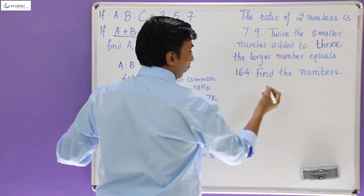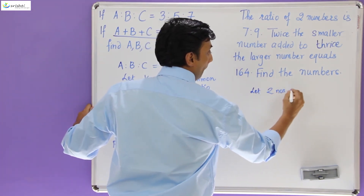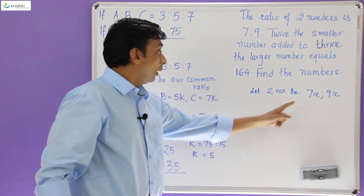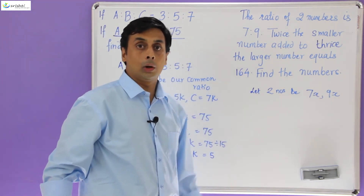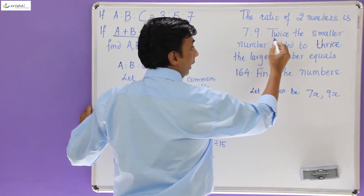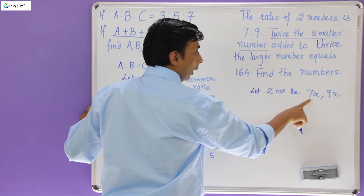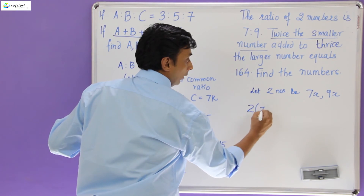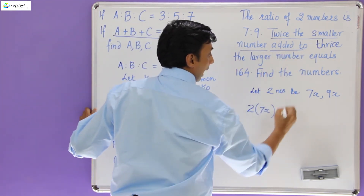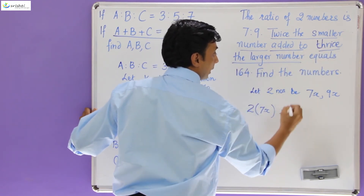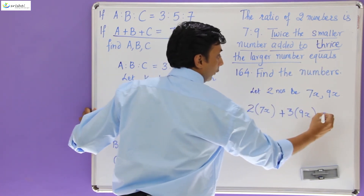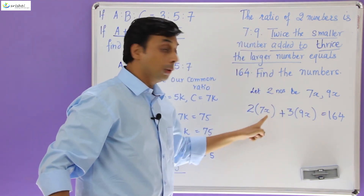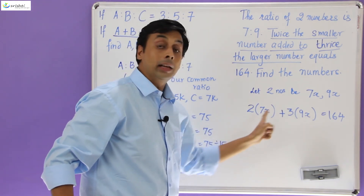Now let's take the second problem. The ratio of two numbers is 7 is to 9. So let's assume the two numbers are 7x and 9x, where x is our common ratio. Now x is unknown, so the two numbers are also unknown. Using the next condition: twice the smaller number — the smaller being 7x — added to thrice the larger number, that is 3 times 9x, equals 164.